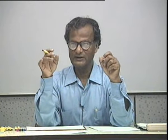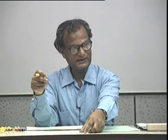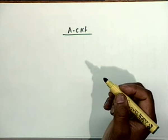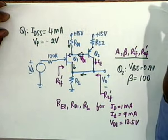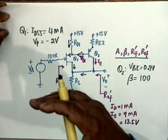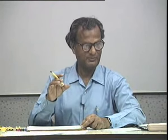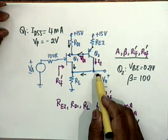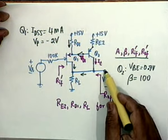We can now go to the AC equivalent circuit. We will draw the A circuit and the beta circuit by looking at the given circuit. First, you have to identify the kind of architecture. The input connection is series. What is the output connection? It is shunt, because the output voltage is taken here and the voltage is being directly fed back.